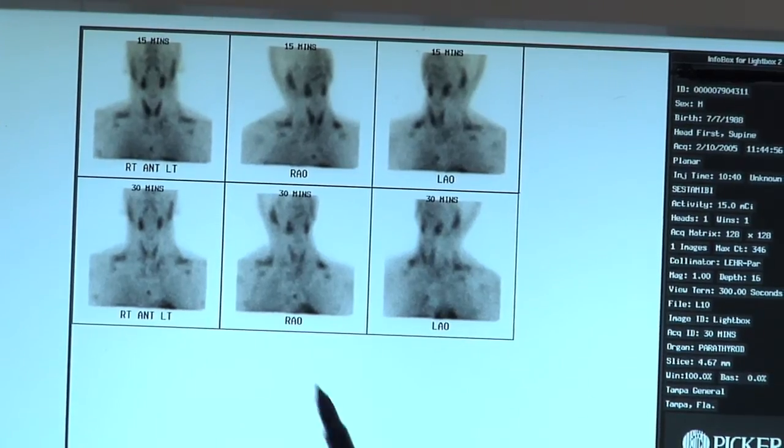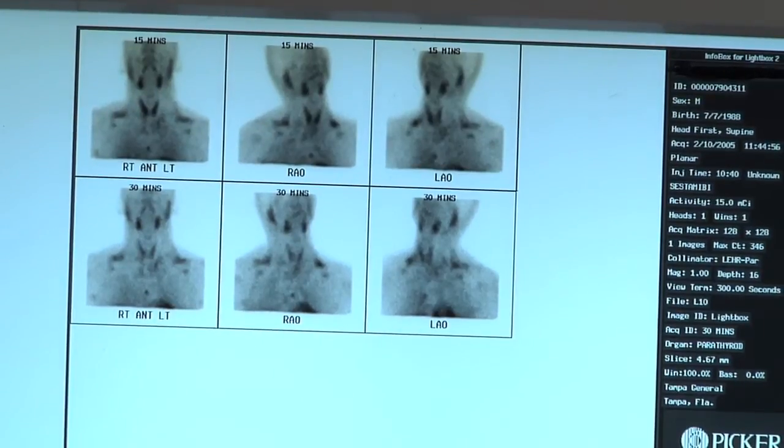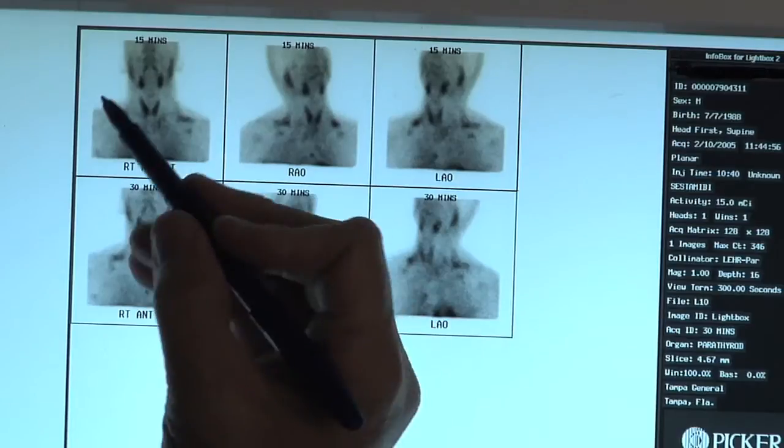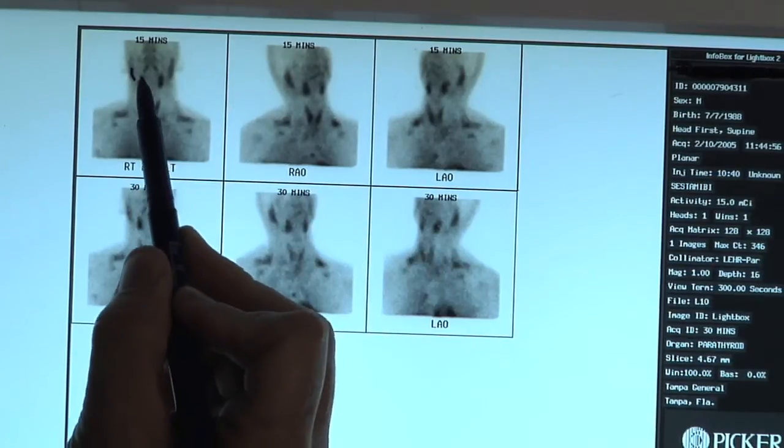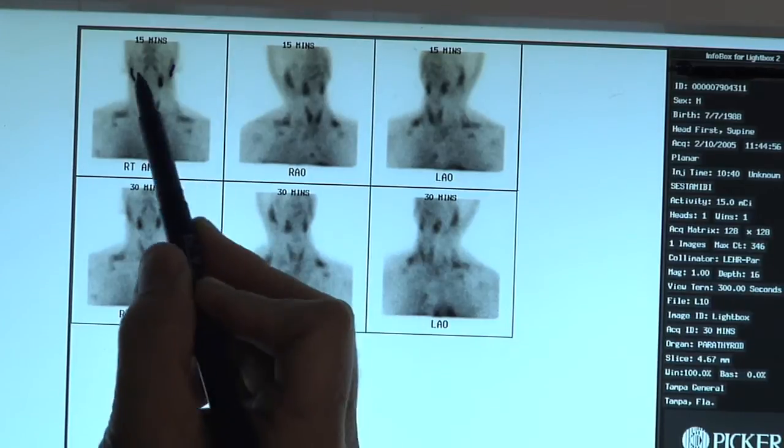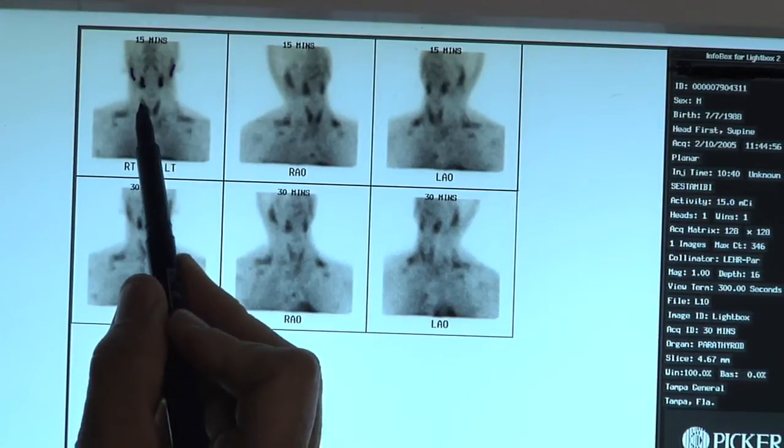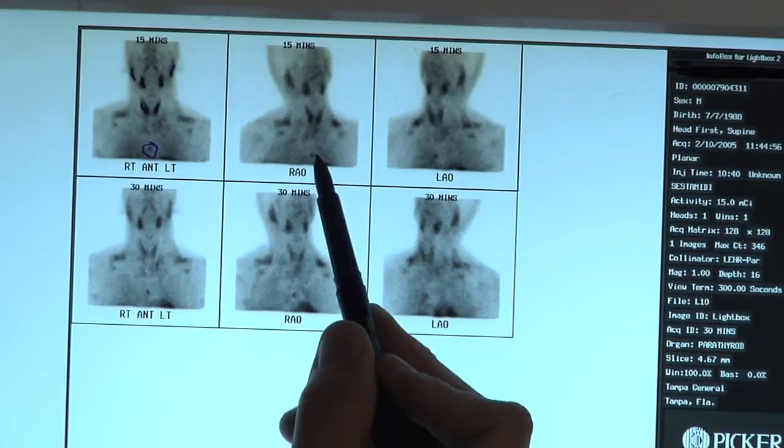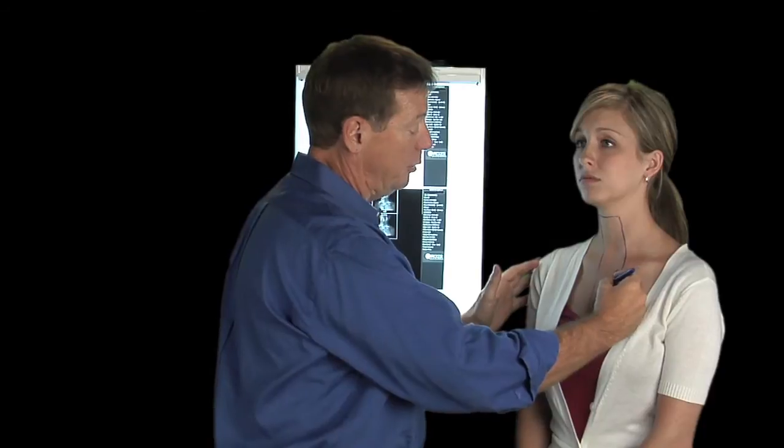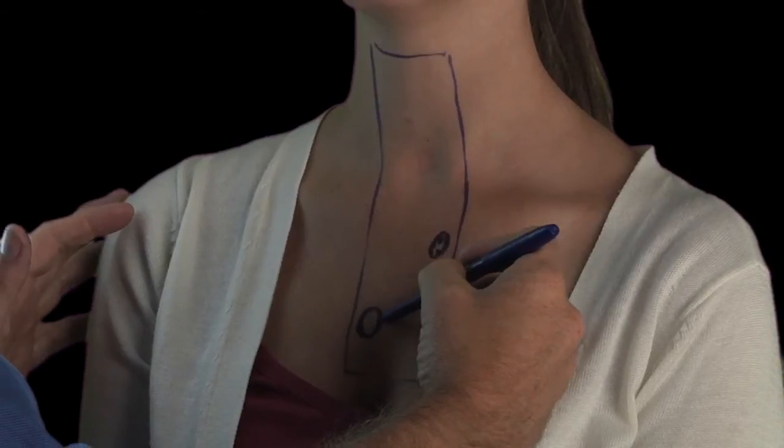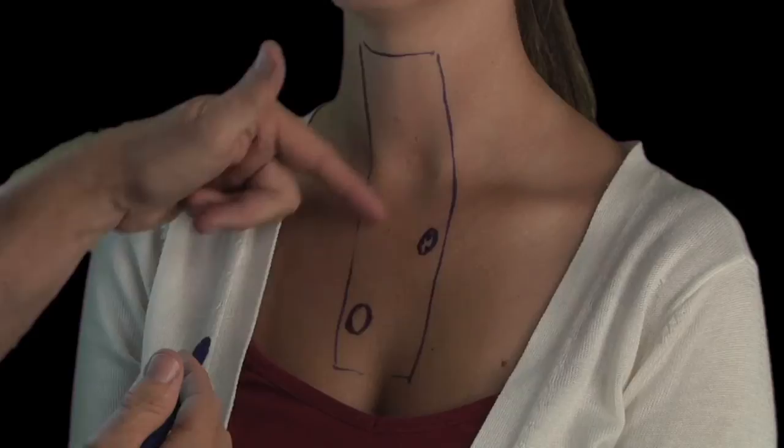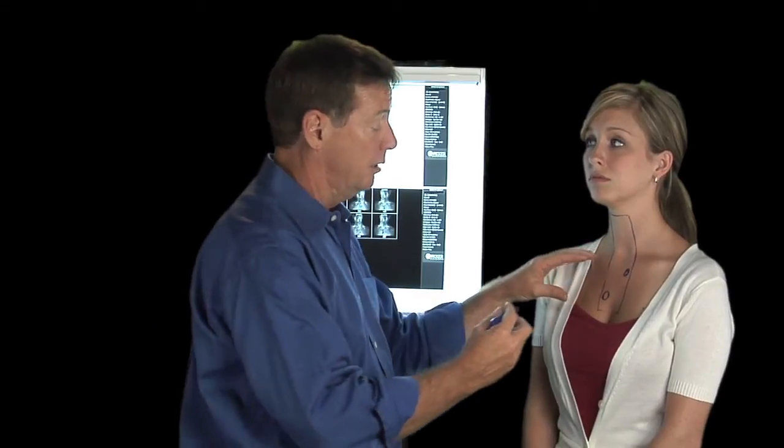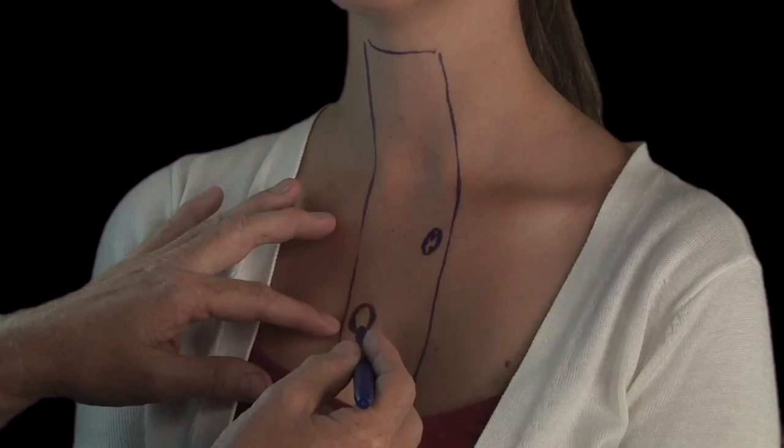This is another good example of where parathyroid tumors can be. This is a little bit more uncommon, but you better understand where it is, or your surgeon can make a big mistake. Here's your shoulders and head again. We're going to ignore the black spots up here in the head, these are salivary glands. Here's the thyroid. Here's the tumor way down here. Let's look where that would be on Callie. On Callie, that tumor is way down here. There's no way you can make an incision in the neck and reach this tumor. Once again, if you don't have a good quality Sestamibi scan, and you don't realize that this tumor is located down here, you can make a big incision in the neck, operate for hours and hours, you'll never find the tumor.